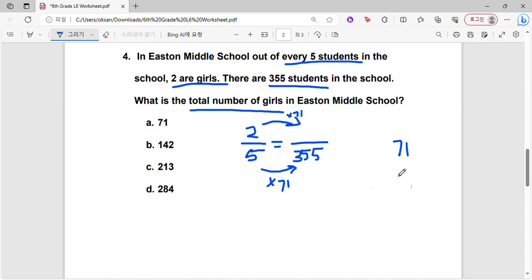So let's do 71 multiplied by 2. And that gives us 2. And then 7 times 2 is 14. And so there are 142 girls in Easton Middle School. So B is the correct answer.